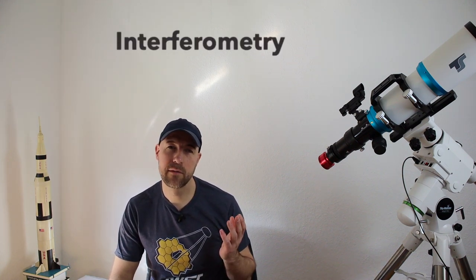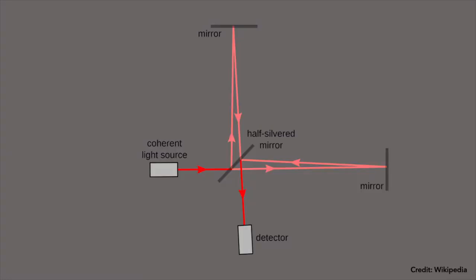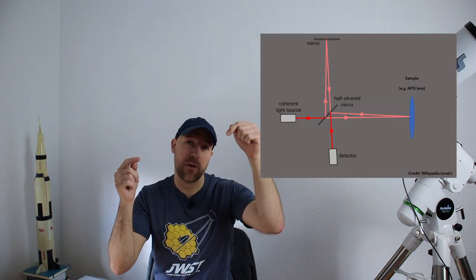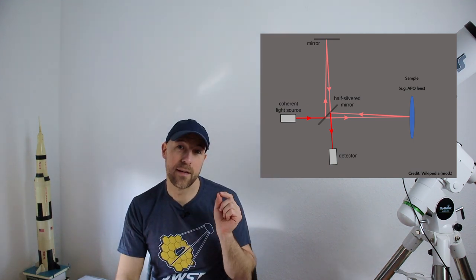The method which was used here is called interferometry. So you have a light source, you have a detector, you have a half permeable or half transparent mirror, and you also have an additional mirror, a full reflecting mirror, and you have a test object. So let's say you have a lens from this telescope. First, the light from the light source hits the semi-permeable mirror, and then half of the light is reflected to the mirror and half of the light goes through the mirror and hits the lens, for example. If you have a perfect mirror and the perfect lens, those laser beams or light beams should hit the detector at the same time.